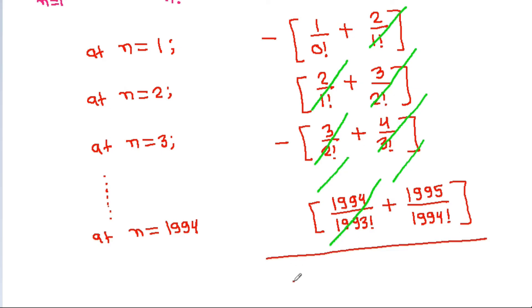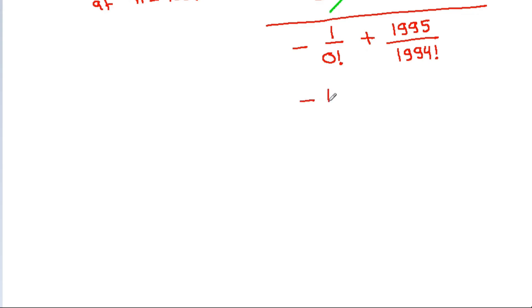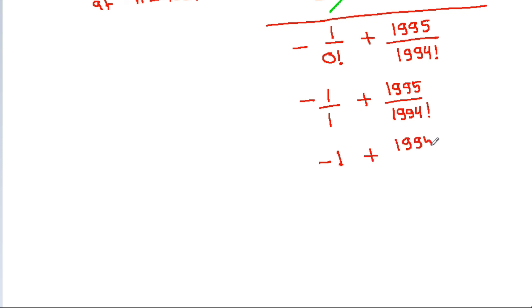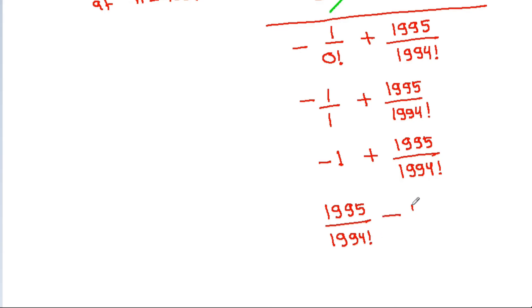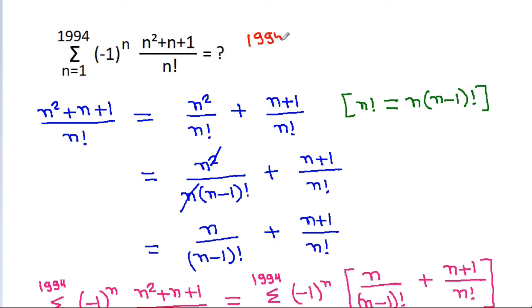So the result is -1/0! + 1995/1994!. This simplifies to 1995/1994! - 1, which is the final answer.